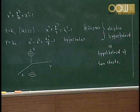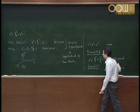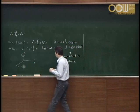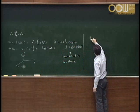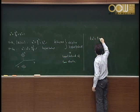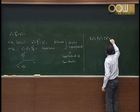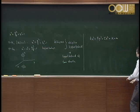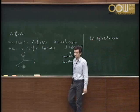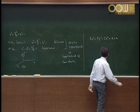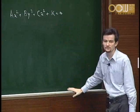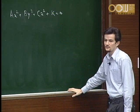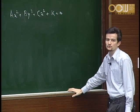We have now identified three types: the cone, the ellipsoid, and the hyperboloid of two sheets. The next case is where two of the coefficients are negative and the other two are positive.